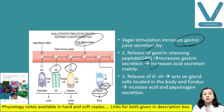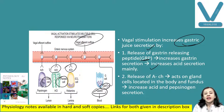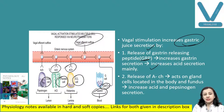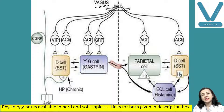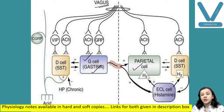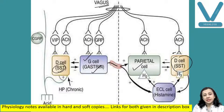In the fundus part we have gastric glands containing parietal cells, chief cells, and enterochromaffin-like cells. Acetylcholine directly acts on all these cells and increases secretion of HCL, pepsinogen, and histamine. This acetylcholine also directly acts on G cells to increase gastrin secretion, and acts on D cells — it inhibits the D cells. D cells release somatostatin, and somatostatin inhibits gastric secretion; so acetylcholine inhibits somatostatin's inhibitory effect.